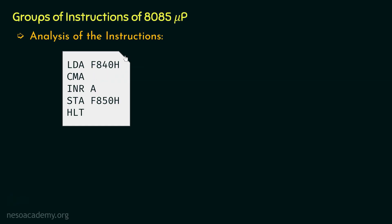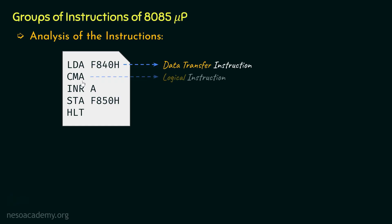Focus on the first instruction: LDA F840. We are going to load the accumulator with the data stored inside this particular memory location, so this is a data transfer instruction. Coming to the second instruction, CMA — it stands for complement the content of the accumulator. Complementation is a logical function; if we send the content through a NOT gate, the output will be the complement. So this instruction is actually a logical instruction.